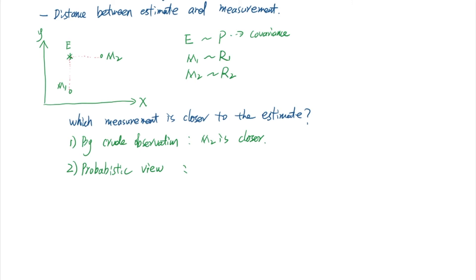Another way is by probabilistic view. Basically, we want to take a look at the 3-sigma covariance envelope. For example, here, imagine that the 3-sigma covariance envelope for E is looking like this.